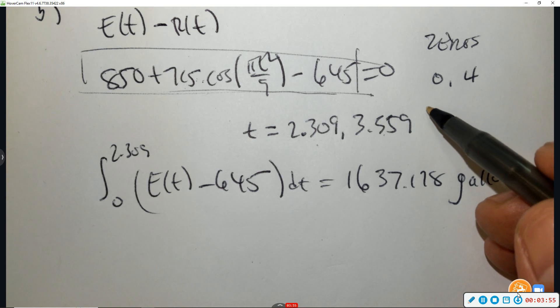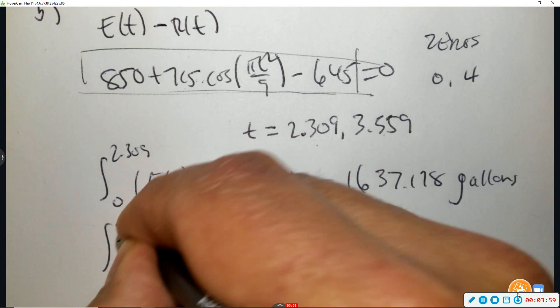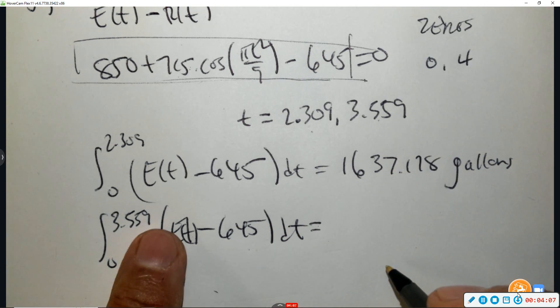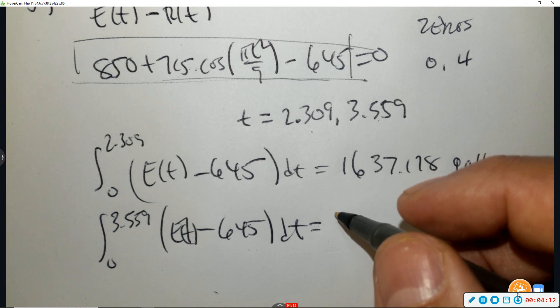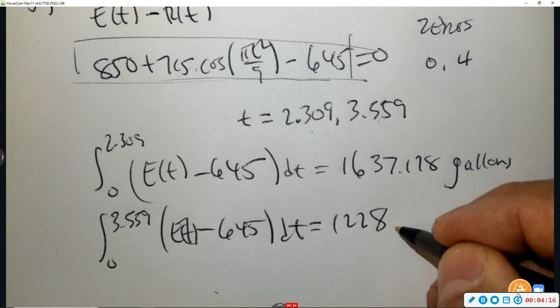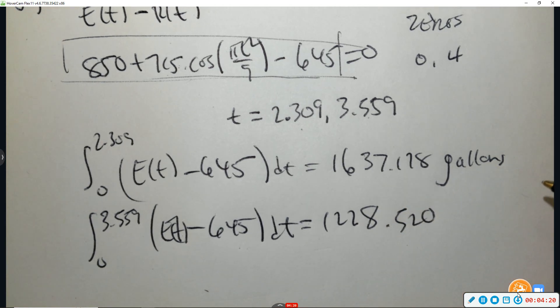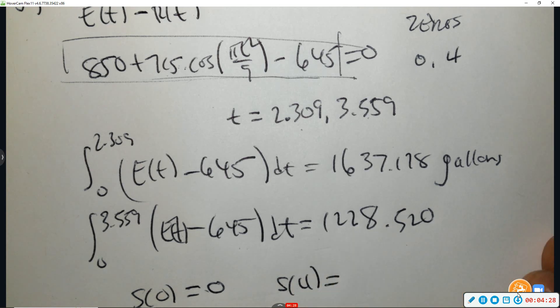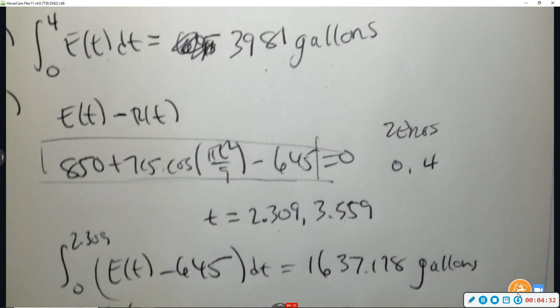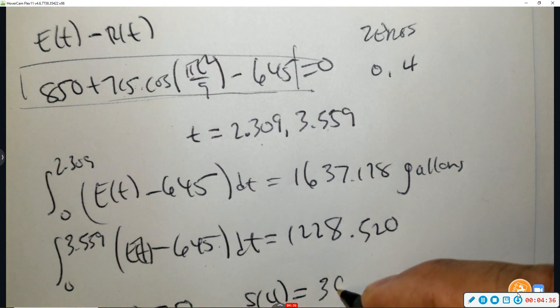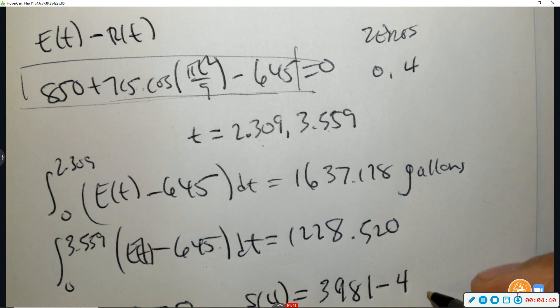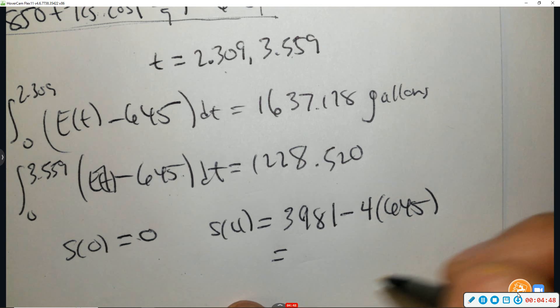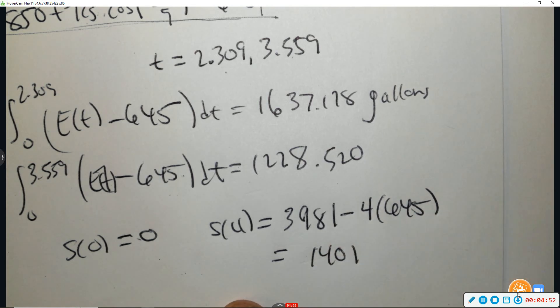Now we're going to do the same thing for 3.559. So type it in again, just press enter and change that number to 3.559. And you get 1,228.520. We already know the amount at the beginning is zero. The amount at the end, so the end is 4. So already at 4, there's 3,981 coming in minus 4 times 645, because every hour is 645. And that number is 1,401.